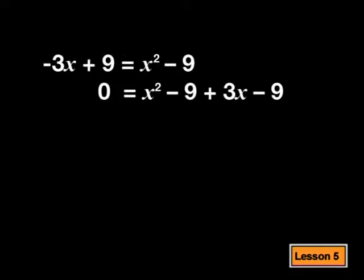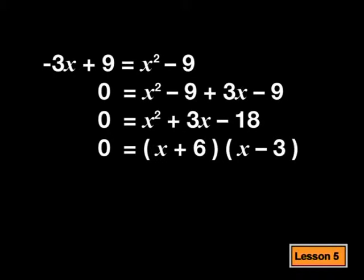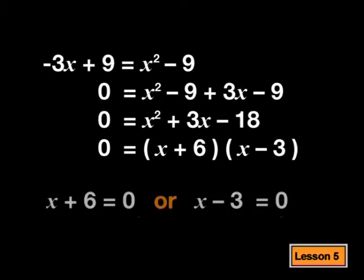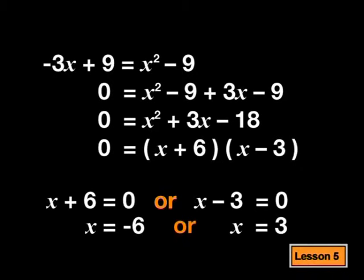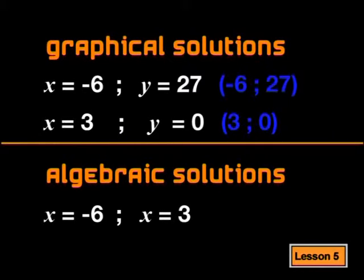Go ahead. First, I need to move everything to one side of the equation. Now I factorize the trinomial and solve for x. So x equals negative 6 or positive 3. Very good, Deboho. But I'm sure you're not quite finished. Why don't you compare your algebraic solution to the solution you found graphically? Okay — the values for x are the same.